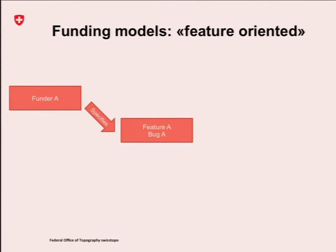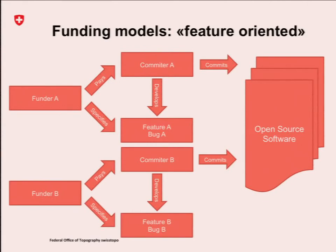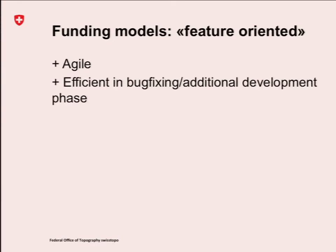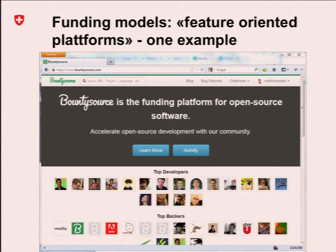The feature-oriented funding model is simply: you have a founder that needs a feature, they pay a committer who develops the feature, and at the end it goes into the open source software. That's a quite common approach — another founder can do the same and you get a new feature. There are several advantages: it's quite agile and very efficient for bug-fixing or new development. But there is a lack of coordination between founders, and it can happen that at some point a feature is not accepted. A typical example is the Bounty Source platform, where backers can provide money to developers and ask for a feature, formalizing this exchange.